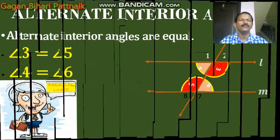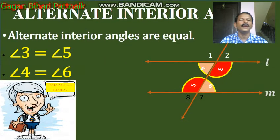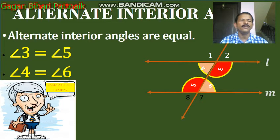Then alternate interior angles. Alternate interior angles are equal. Angles 3, 4, 5, and 6 are interior angles. Angle 3 is equal to angle 5, and angle 4 is equal to angle 6.